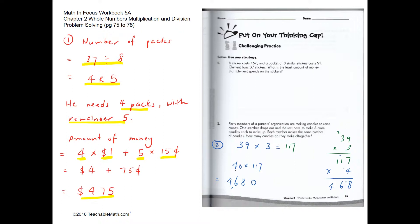Question 2. 40 members of a parents' organization were making candles. One member drops out and the rest have to make 3 more each to make up. Each member makes the same number of candles. Now with 39 remaining parents, each making 3 more to make up for the difference, the difference they have to make up would be 117.